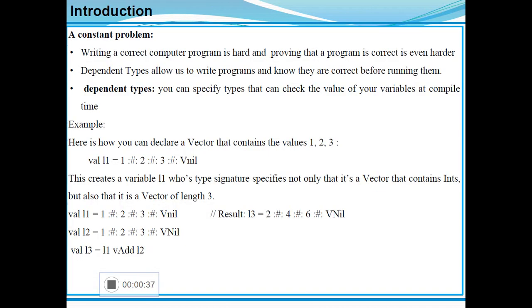Whenever we are developing a new program, a constant problem arises in that is correctness of the program. Dependent types allow us to write programs and know they are correct before running them. You can specify types that can check the value of your variables at compile time. For example, you can declare a vector that contains the values 1, 2, 3.